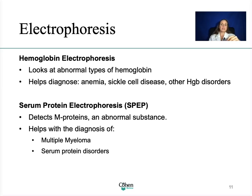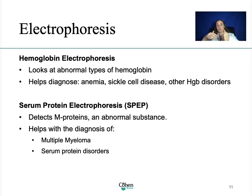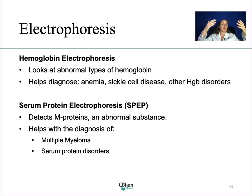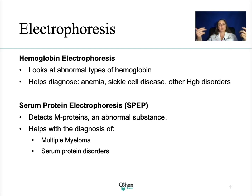Another form of electrophoresis used commonly in the cancer setting is serum protein electrophoresis, also known as SPEP. We use this to check for myeloma — it detects the M protein, which is an abnormal substance. In myeloma, the higher the M protein, the worse the myeloma. With treatment, once we start therapy, we see these M proteins decrease and eventually be completely gone, which is when they go into remission.